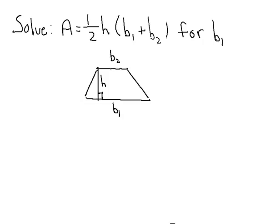And so in the figure below, I've labeled those two parallel sides as b sub 1 and b sub 2. And h refers to the height, which is the distance between the two parallel bases.